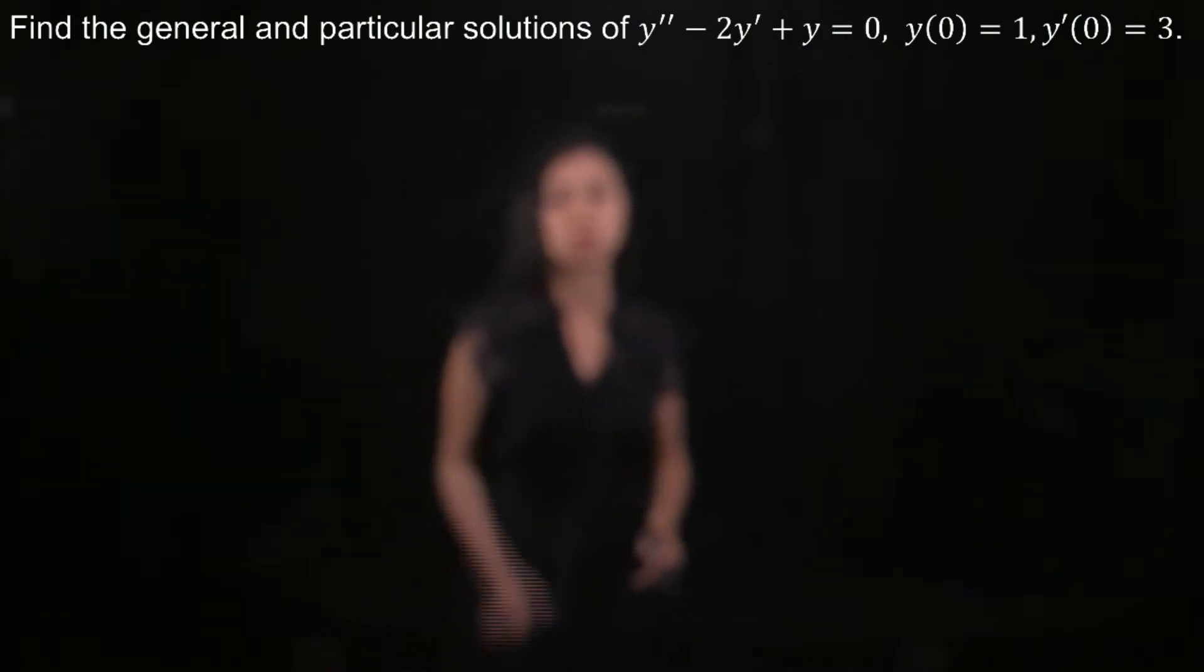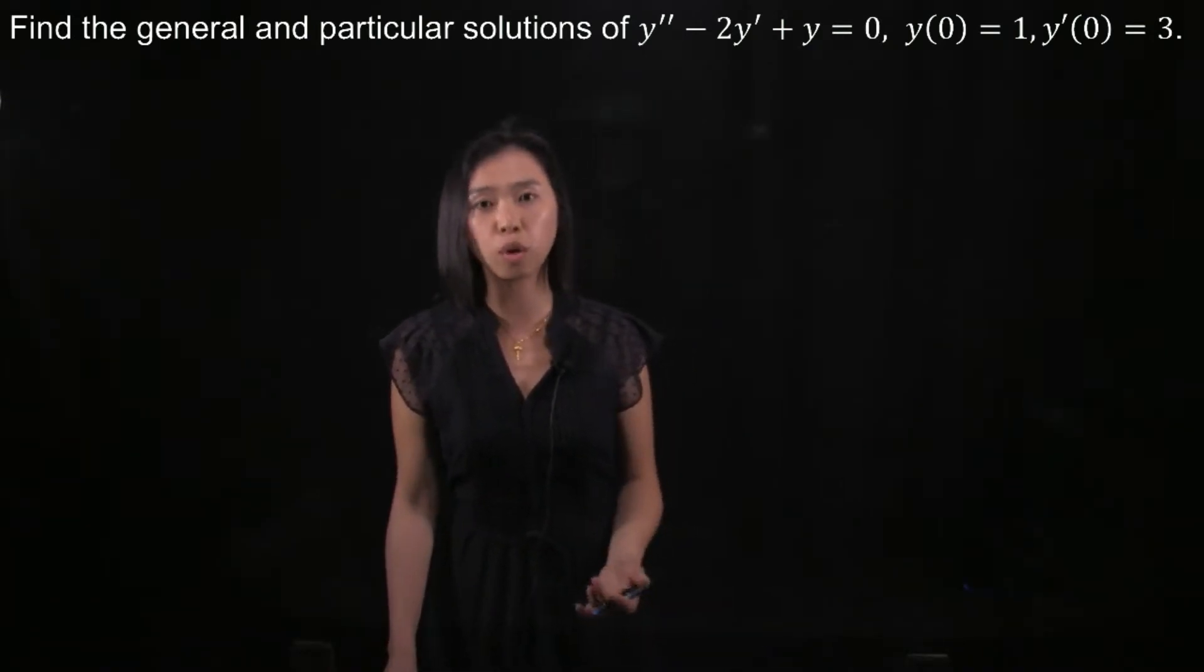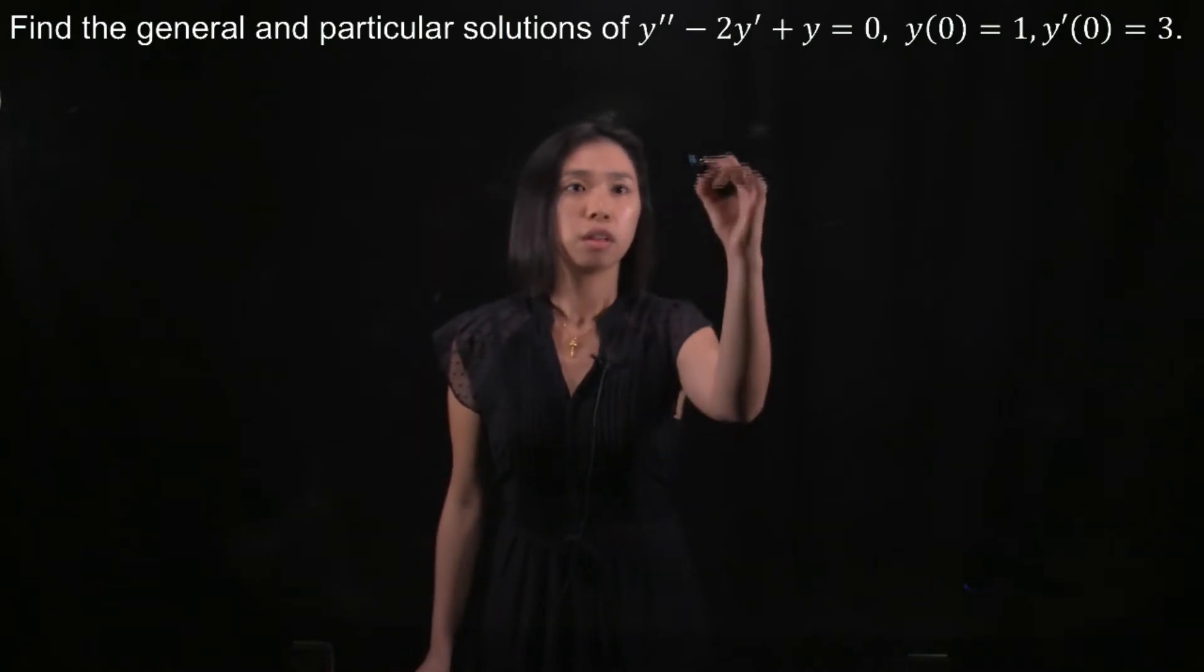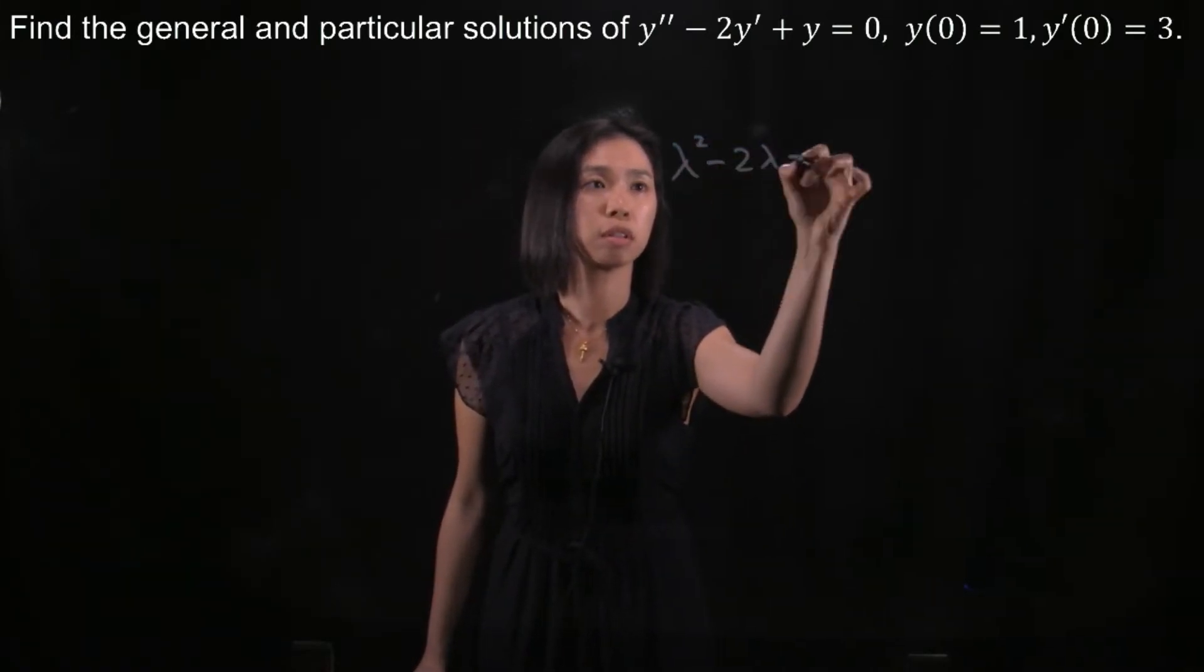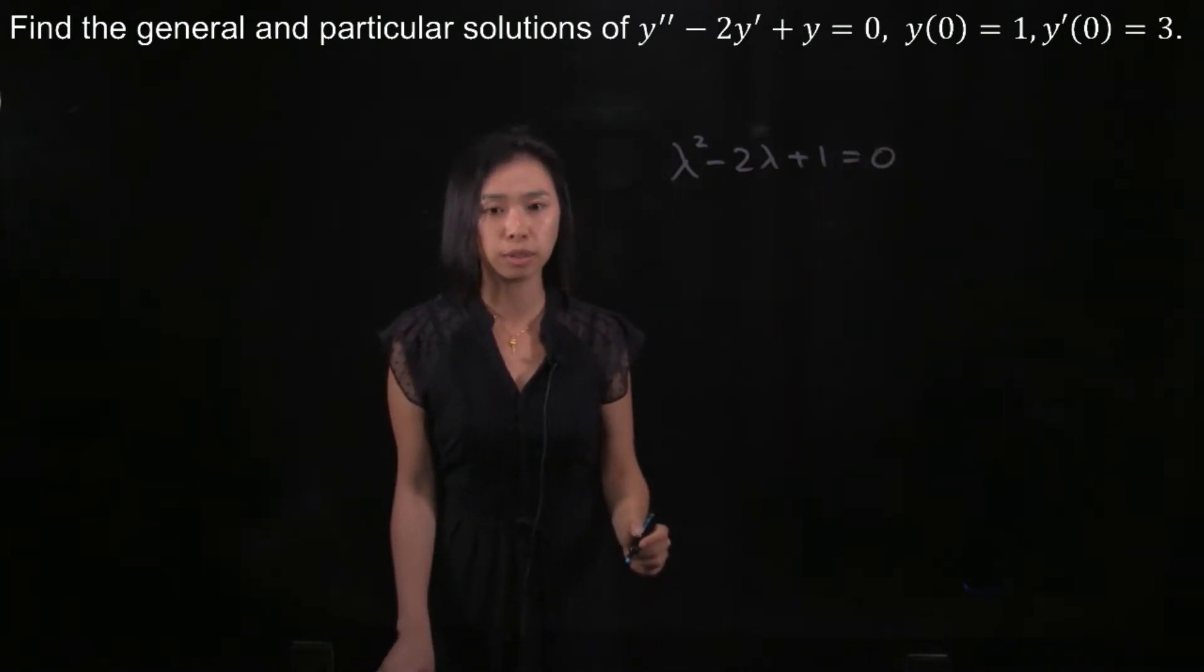Find the general and particular solutions of this differential equation with two initial conditions. First of all, we have to write down the characteristic polynomial, which is lambda squared minus 2 lambda plus 1 equals 0.